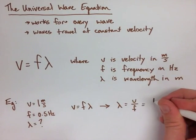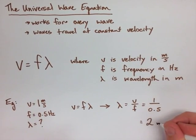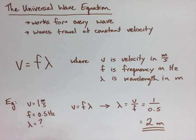We put 1 over 0.5, and we end up with 2 meters for our final wavelength.